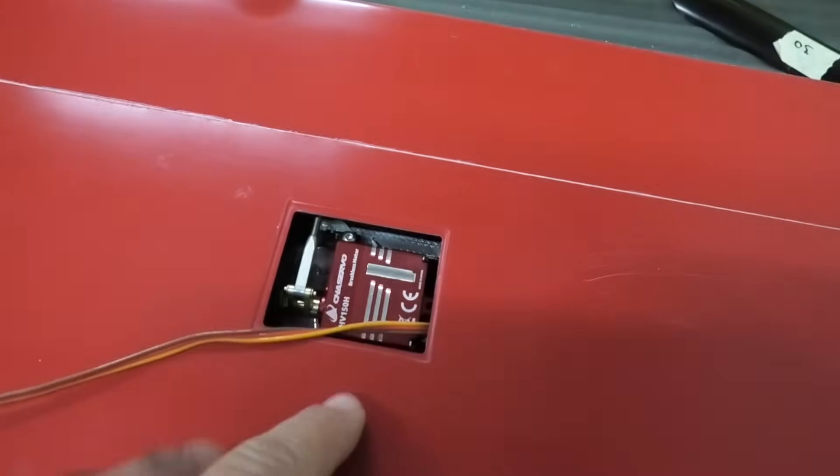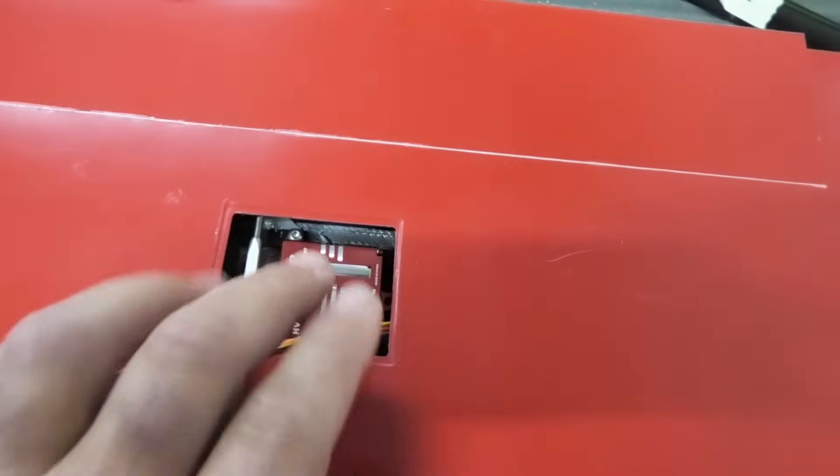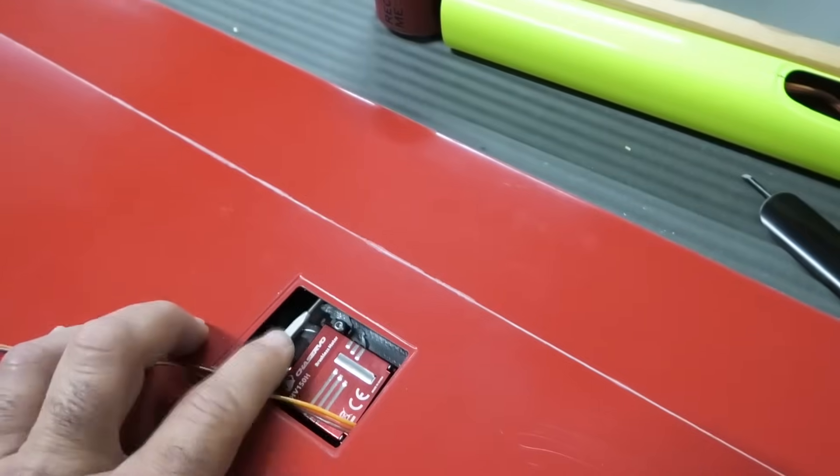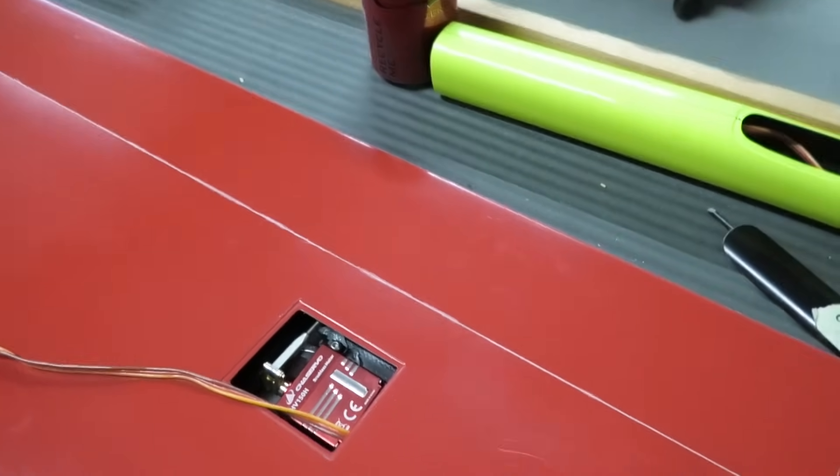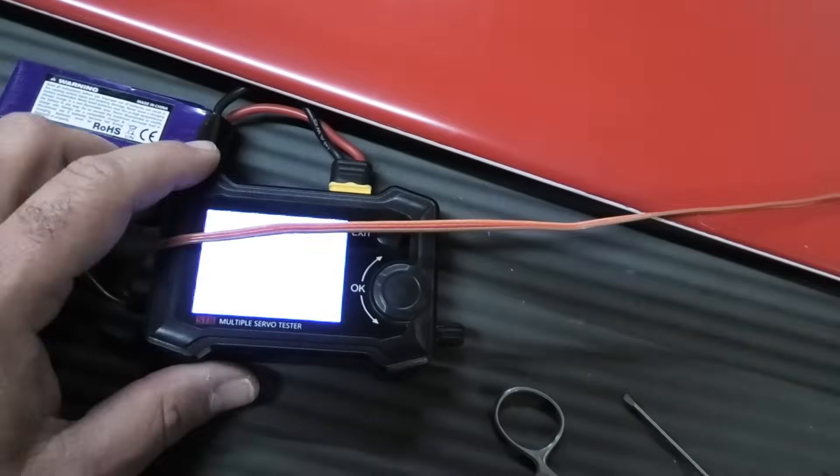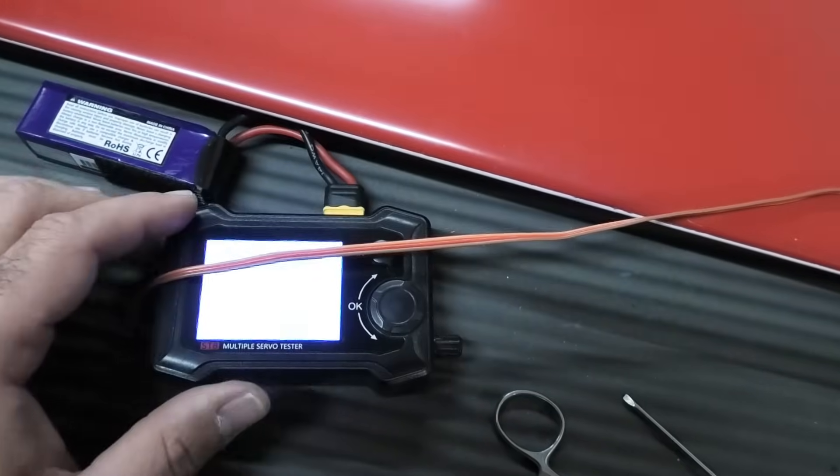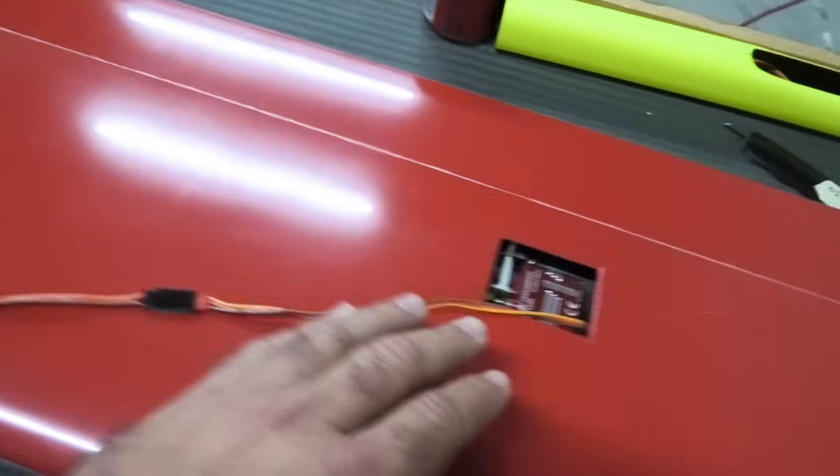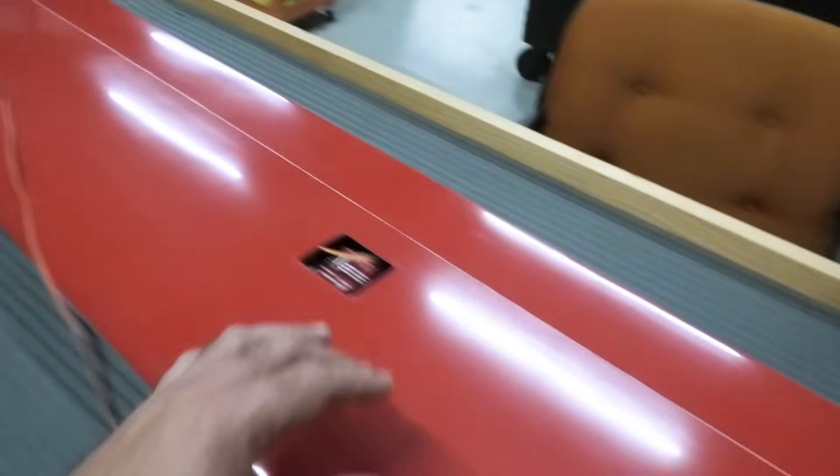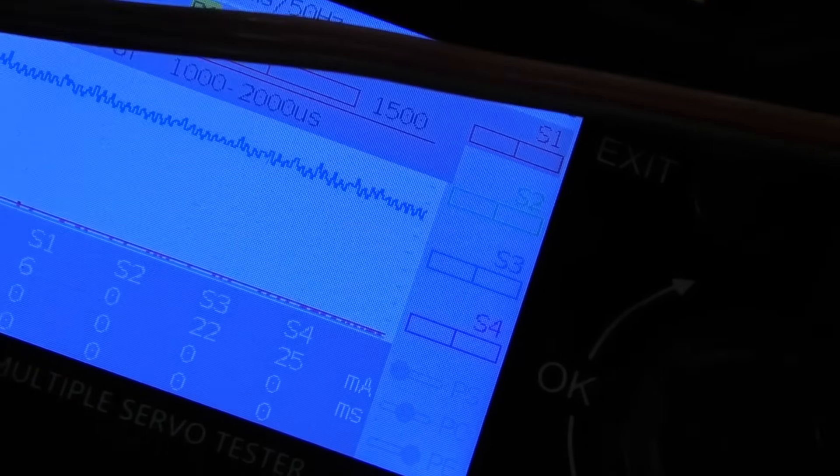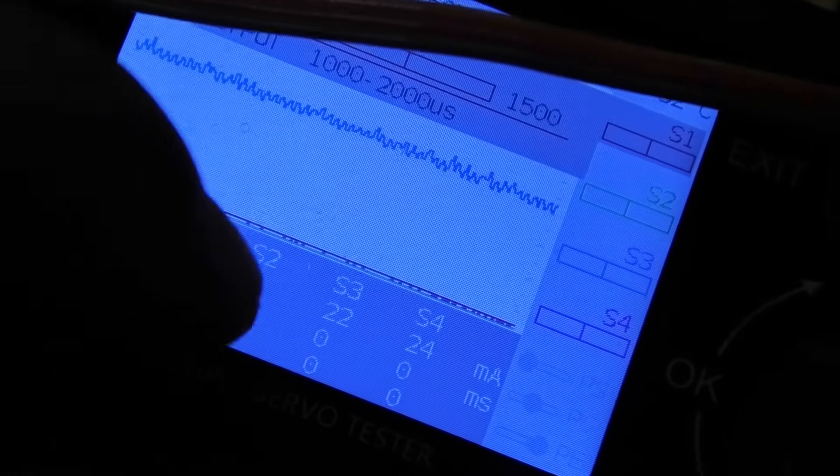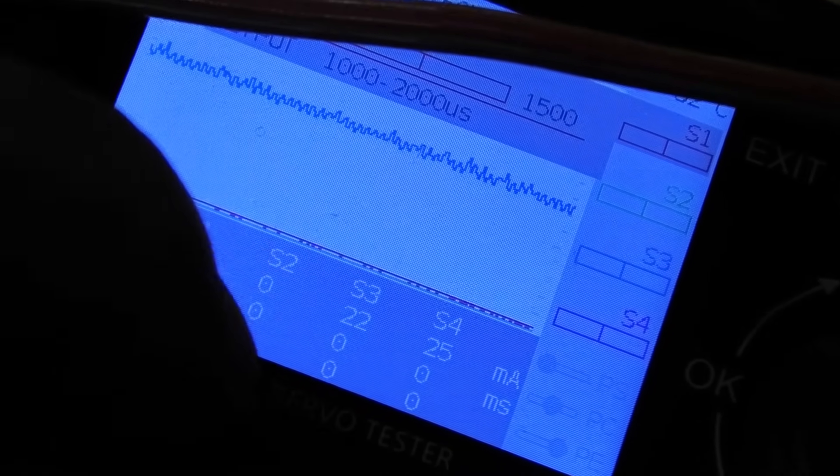All right, I've buttoned up the flap servos. They're thread locked in, I removed the plastic, all the clips are in place. They're looking really good and I'm using a toolkit servo tester to test the current that each servo is drawing.